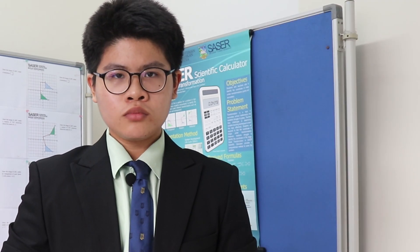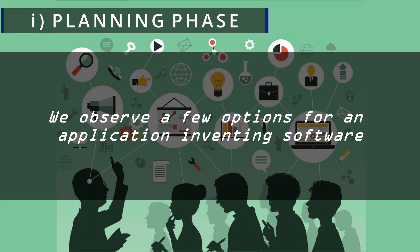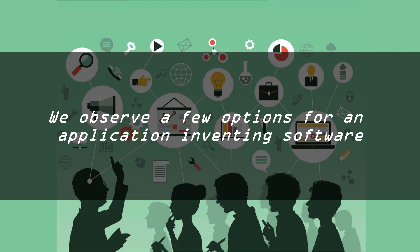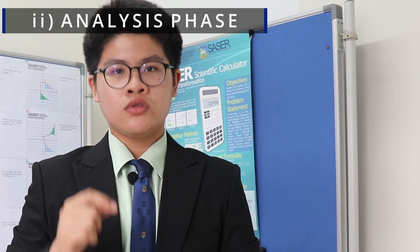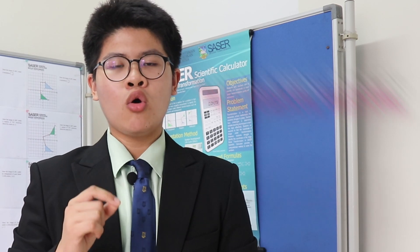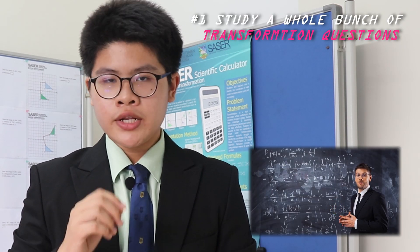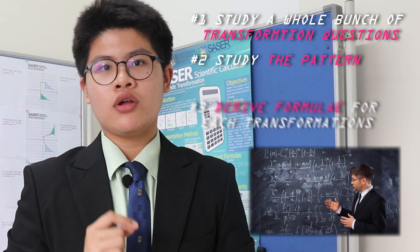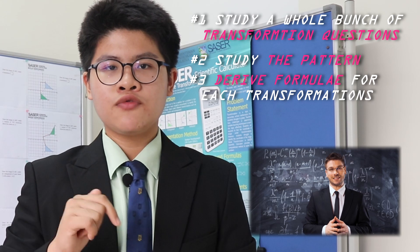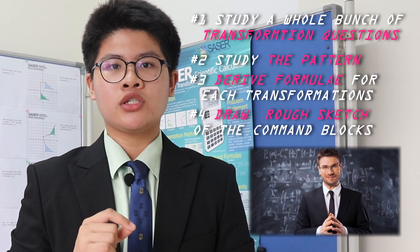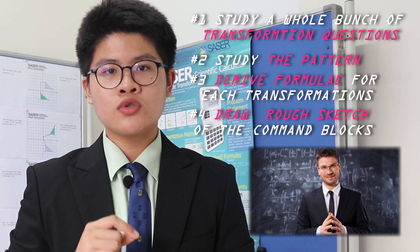For the first phase, Planning — during this phase, we observed a few options for application-inventing software that we were to use, and we later decided to use MIT App Inventor as it is one of the best available. Second phase, Analysis — during this phase, we studied a whole bunch of transformation questions, studied their patterns, and derived a formula suitable for all types of transformation questions. During this phase also, we drew a rough sketch of the command blocks that we were to use for our app.